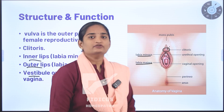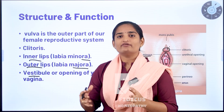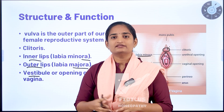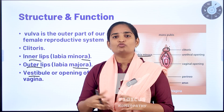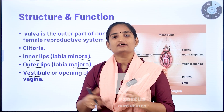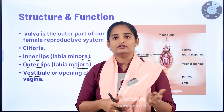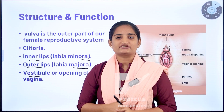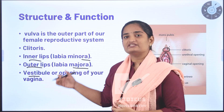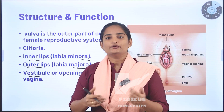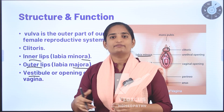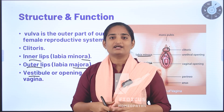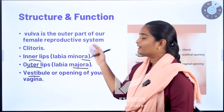This is all about the structure and function of the vulva system. Vulva is not a single part — it consists of a group of structures like clitoris, labia majora, labia minora, and vestibule. These structures help in urination, passing menstrual blood, and also in childbirth.